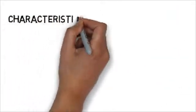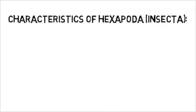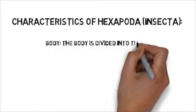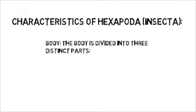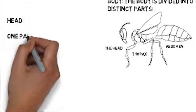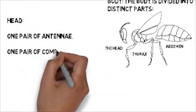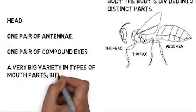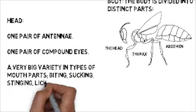Now, let's take a look at what the characteristics for hexapoda are. First of all, their bodies are divided into three parts. This is what it means to be arthropoda. They have a head, thorax, and abdomen. The head has one pair of antennae, one pair of compound eyes, and a large variety in types of mouth parts, such as biting, sucking, stinging, licking, etc.